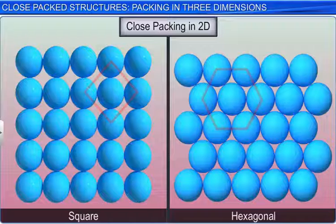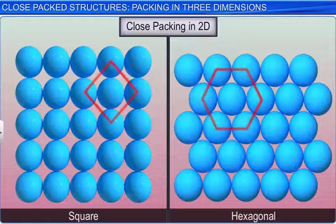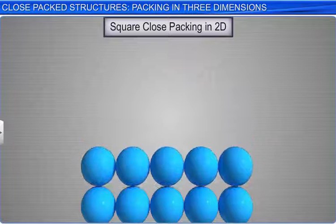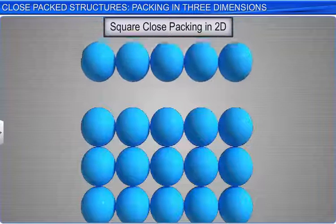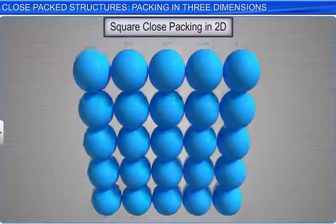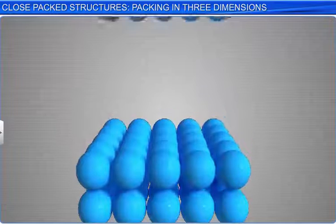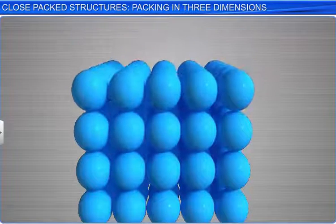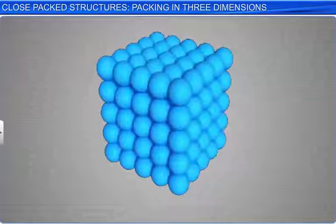We will extend our knowledge of close packing in two dimensions to build symmetrical patterns in three dimensions. Let's first study three-dimensional close packing from two-dimensional square close packing. In order to build a three-dimensional structure, it is easier to stack two-dimensional square close packed planes one above the other.